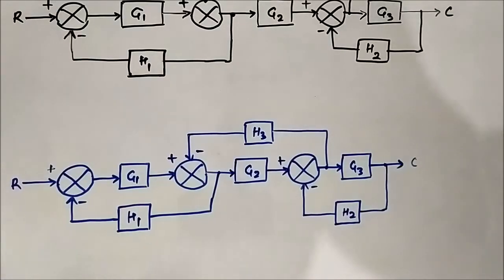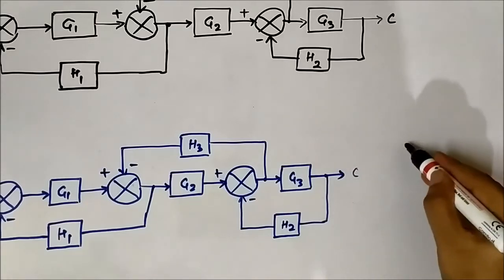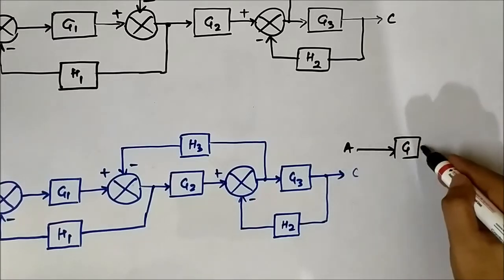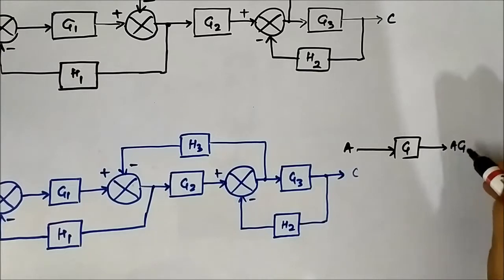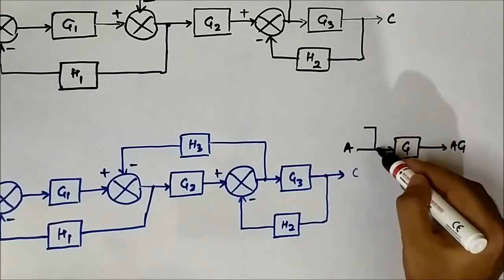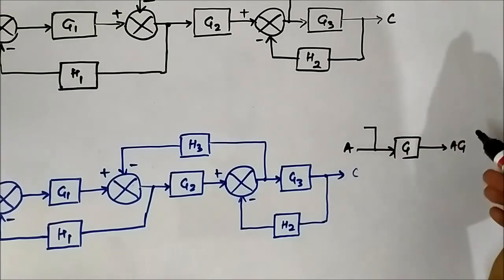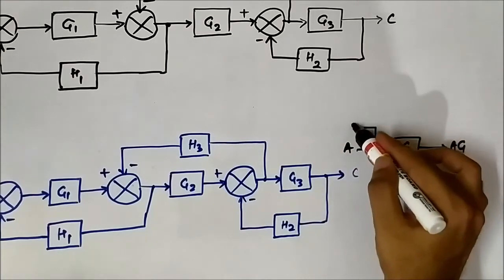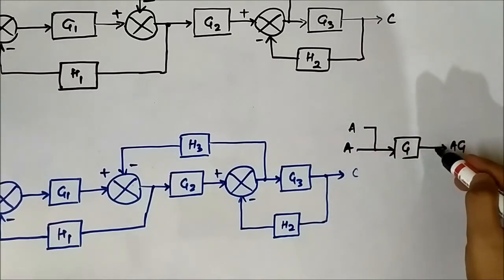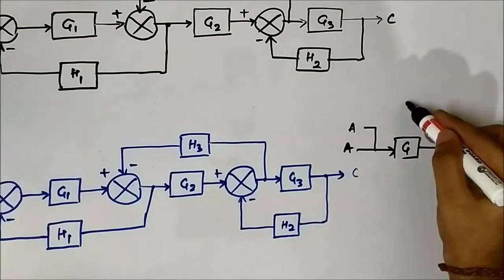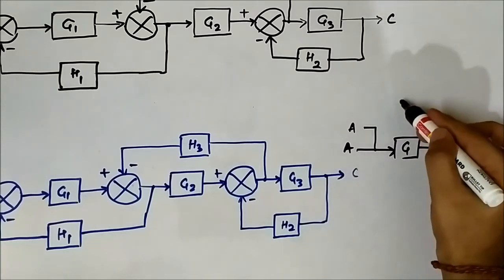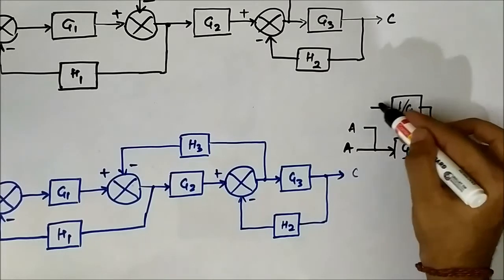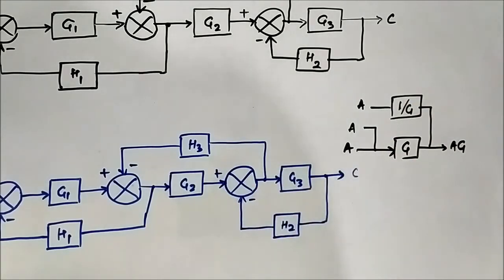The basic mechanism is: we have a block A and G. The takeoff point is behind the block, and we have to shift it ahead. Whenever you shift a takeoff point ahead or behind a block, the value of the takeoff point should remain the same. Here the value is A. So when we shift it ahead, it naturally becomes A·G. If we pass it through a 1/G block, then it becomes A again.